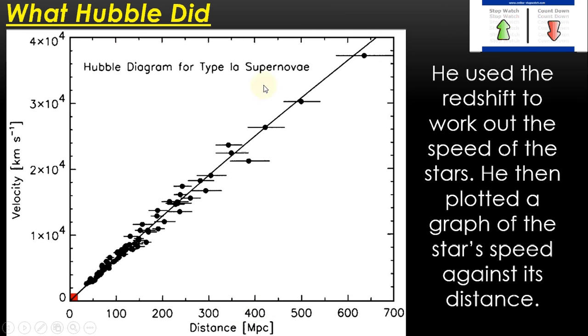So what Hubble did is he looked at the distance of different galaxies. Well, type 1a supernovae, but they appear in different galaxies. And he looked at their velocity from the redshift, and he plotted them on a graph. And you can see that's a pretty damn good correlation. The further away a galaxy appears, the faster it's traveling. And this is one of the most important astronomical finds ever, because this is one of the biggest pieces of evidence for the Big Bang.